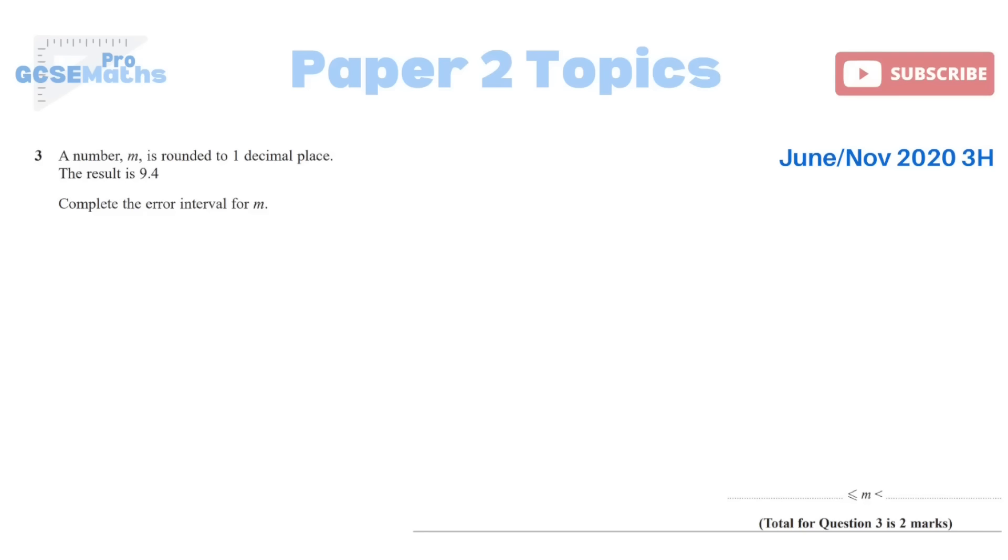Starting off with error intervals, we've got two types of this question. The first one is a number M is rounded to one decimal place. The result is 9.4. Complete the error interval for M. Whenever your error interval question has been rounded, it's exactly the same concept as upper and lower bounds. So you just need to write something a little bit less and a little bit more. For this one, it could have been as small as 9.35 and it could be as big as 9.45.